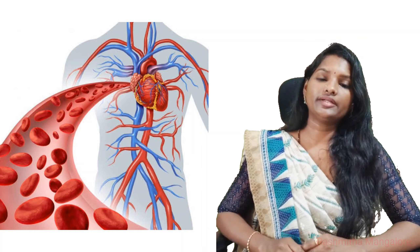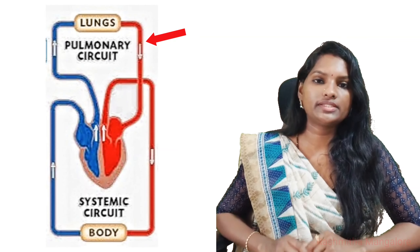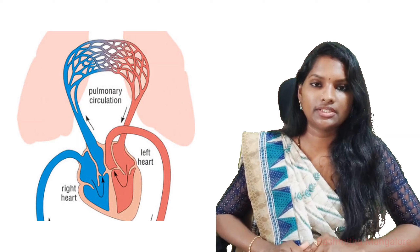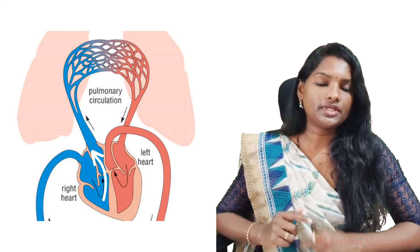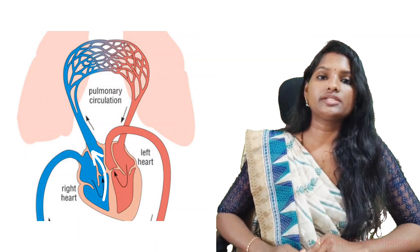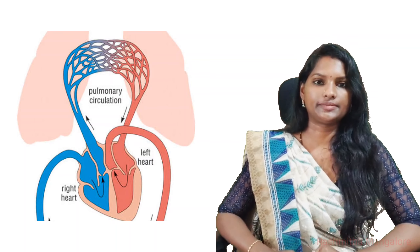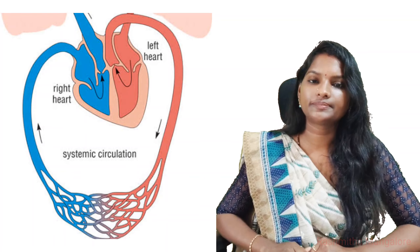The circulatory system can be divided into two types: pulmonic circulation and systemic circulation. One important point to remember here — pulmonic circulation involves circulation of deoxygenated blood from the heart to the lungs, whereas systemic circulation involves circulation of oxygenated blood from the heart to the body.